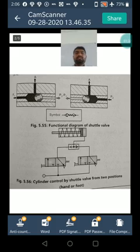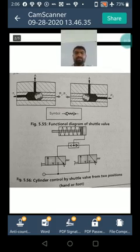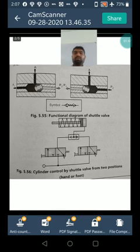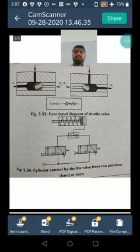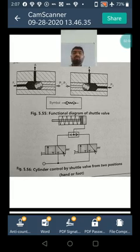The next diagram is shuttle valve. This is a double check valve, figure shows 5.55. In that figure, two inlets and one outlet are shown. The first position P1 is loaded by air while P2 is connected to the exhaust. Hence, the flow flows from P1 to outlet A, and in the other one flow is from P2 to A.